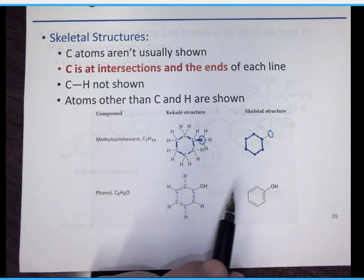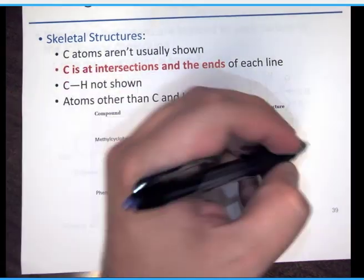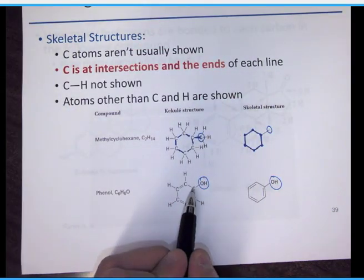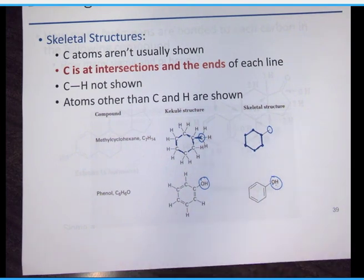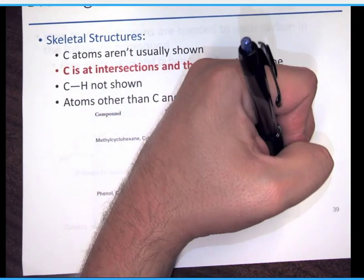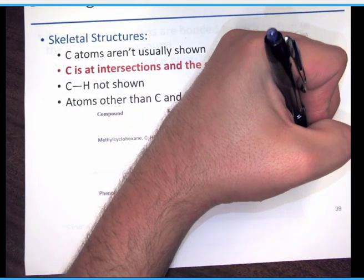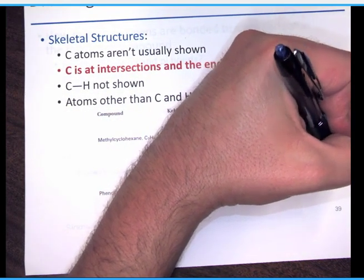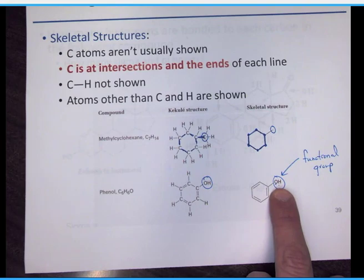Double bonds are still represented as double lines in skeletal structures. Pay attention: if you see 'OH' at the end of a line, the hydrogen is shown because it's not a carbon-hydrogen bond — any bond with hydrogen that's not carbon is always shown. That OH group is called an alcohol group and is a class of functional groups, which we'll discuss more in a couple of chapters.